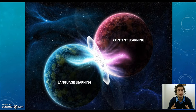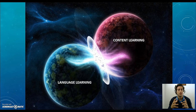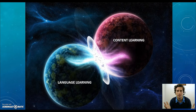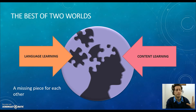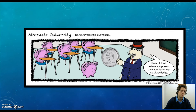CLIL is a mixture — a way to take the best out of two worlds: language learning and content learning. There is a strong connection between them. When we talk, we talk about something — there is content; language cannot be empty. So language learning and content learning have found a way to integrate themselves and find a lot of benefits for our students. They complement each other: language learning is the missing piece that content learning was needing, and vice versa.